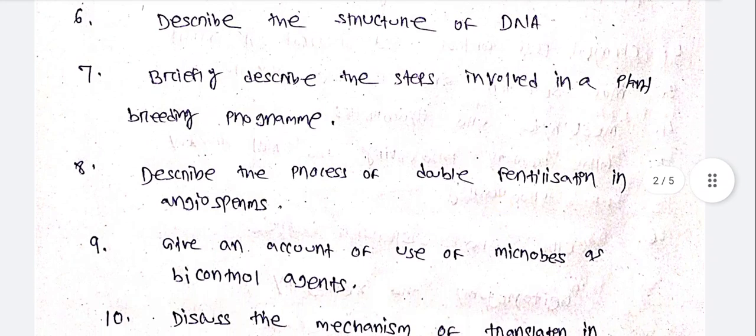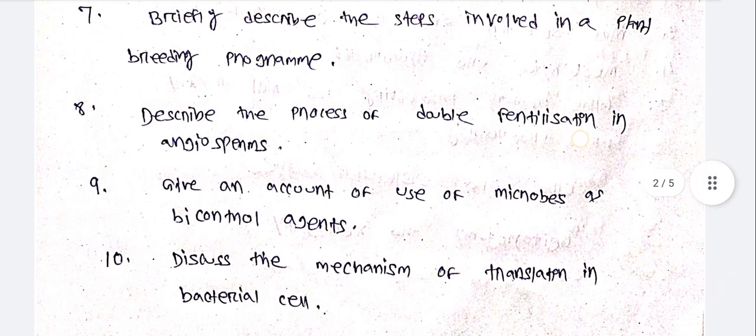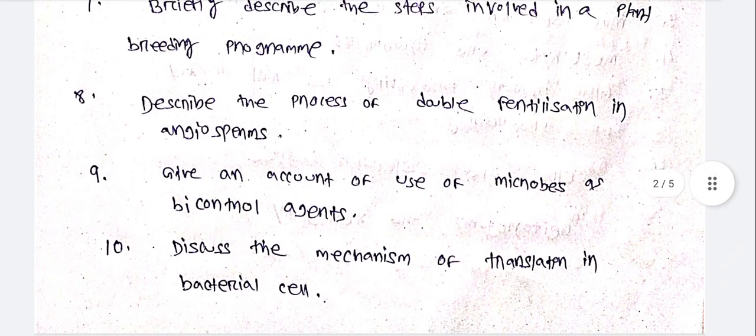Describe the process of double fertilization in angiosperms. Give an account of the use of microbes as biocontrol agents. Discuss the mechanism of translation in bacterial cells.